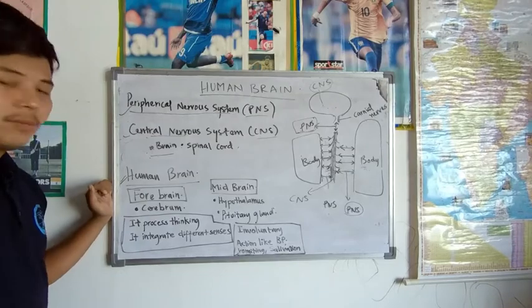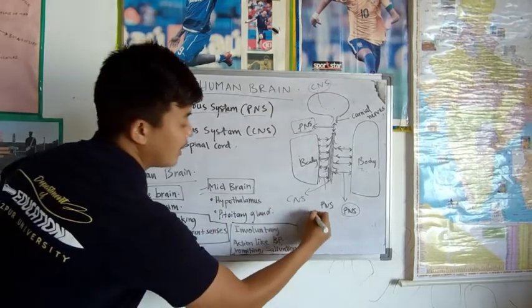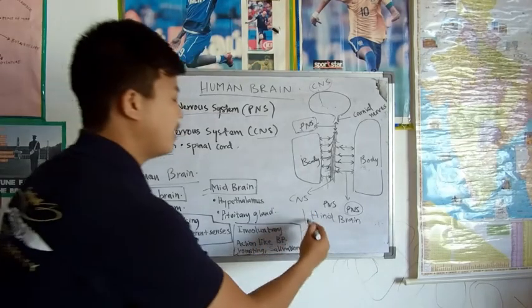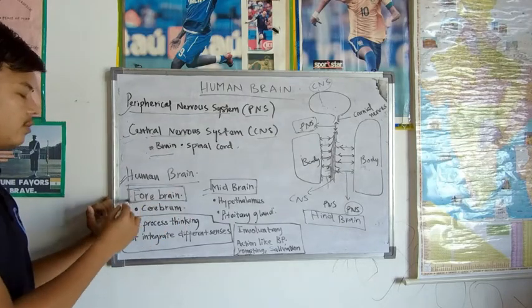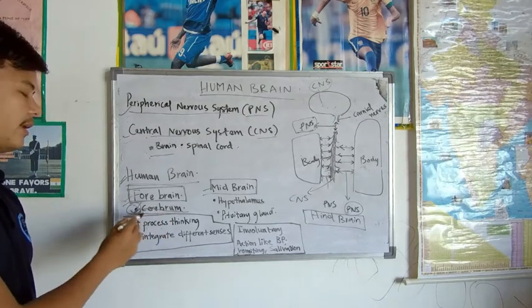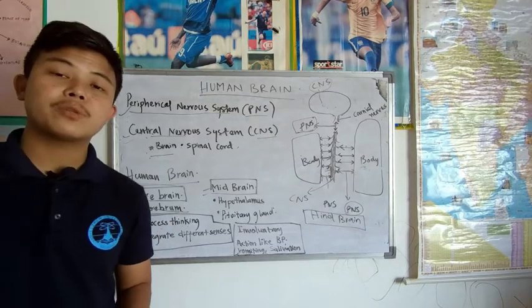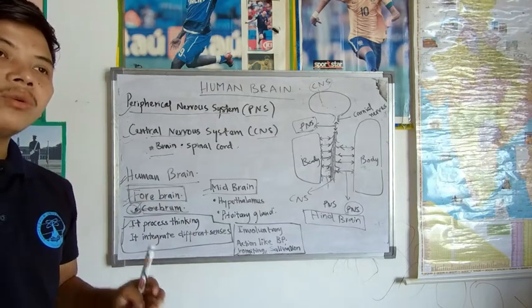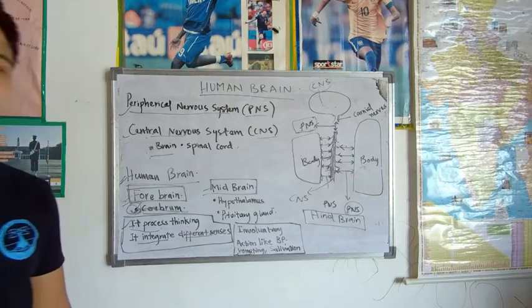Now we will study entirely about the human brain. The brain is divided into three parts: the forebrain, the midbrain, and the hindbrain. In the forebrain, as seen in the textbook diagram, it consists of the cerebrum. The cerebrum is the largest part of the brain, and the function of the forebrain is that it processes thinking. All complex voluntary actions — actions we do willingly — are processed in the cerebrum.